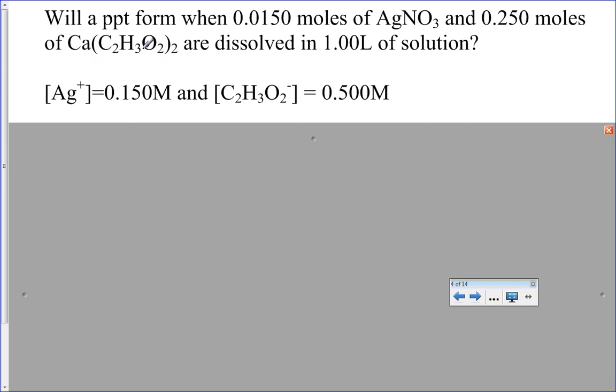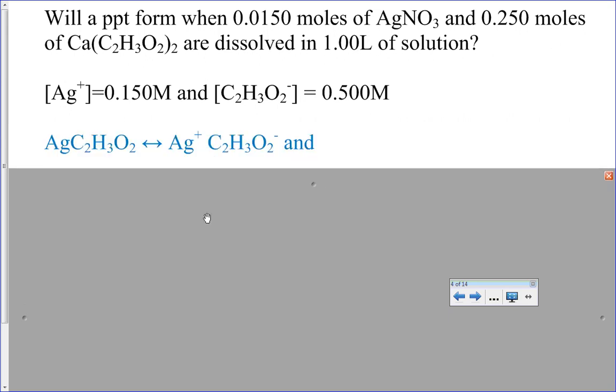Now, the fact that it was 2 to 1 in the source doesn't have any effect for us at all. The actual reaction that's going to happen for a precipitate would be a 1 to 1. Should have a little plus sign in there.